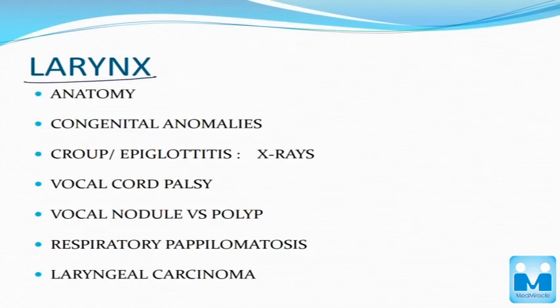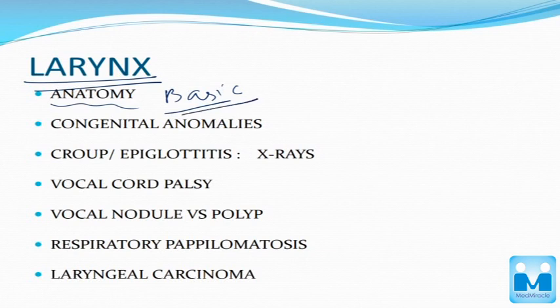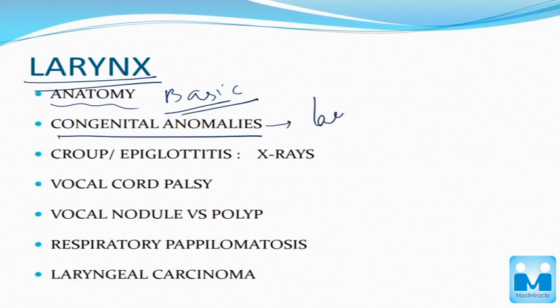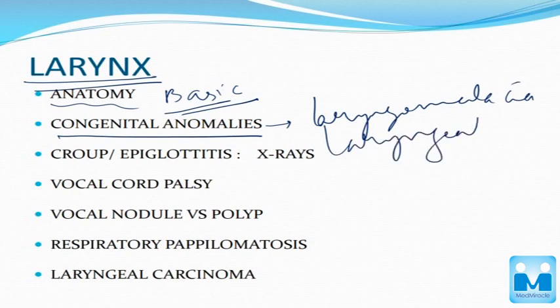Coming to the larynx section, you first have to know the basic anatomy — just an overview would suffice; you don't have to go into detail. Unlike the middle ear where a three-dimensional image was required, basic anatomy of the larynx is sufficient. The other important part is congenital anomalies — laryngomalacia and laryngeal web — you have to know these things.